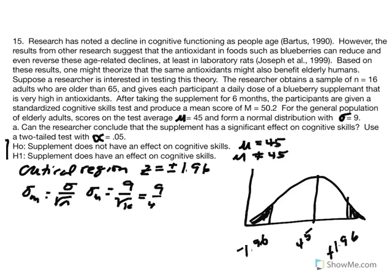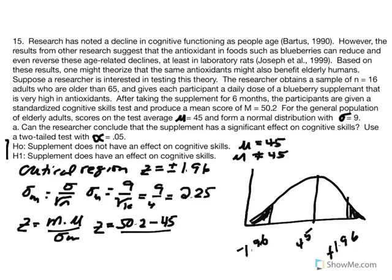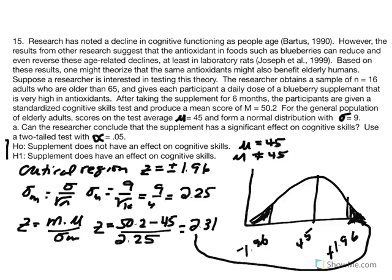Nine divided by four gives us a standard error equal to 2.25. Our z value equals m minus mu over standard error: our sample average was 50.2 minus the population average of 45, over 2.25. We see a difference — our job is to determine if that difference is due to sampling error or due to the treatment, the supplement. The calculation: 50.2 minus 45 divided by 2.25 equals 2.31. That's our z score, and it's greater than 1.96, so we're going to reject the null.